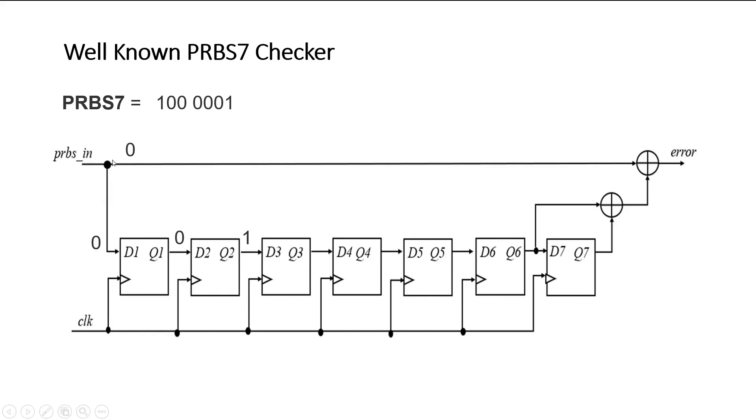Similarly, when fourth bit is applied here, all these bits will be shifted. This is the fourth bit. When it appears at PRBS in, it is applied to the first flip-flop and other bits are shifted. When fifth bit will be applied, all these bits will be shifted. So this is the fifth bit, other bits are shifted.